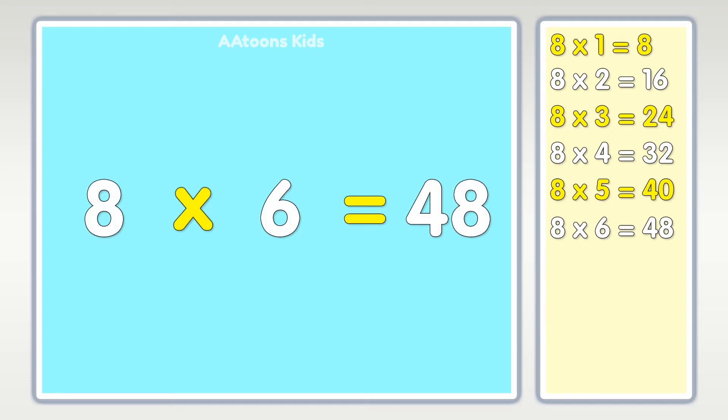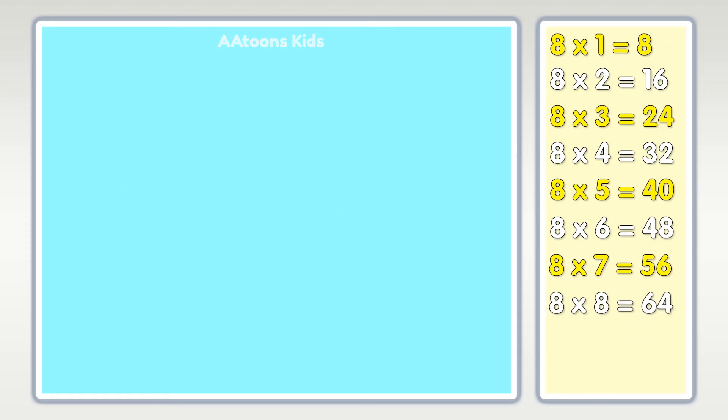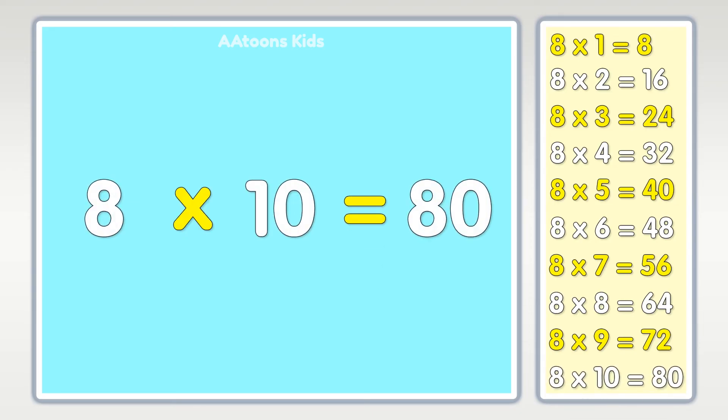Eight times seven is fifty-six, eight times eight is sixty-four, eight times nine is seventy-two, eight times ten is eighty.